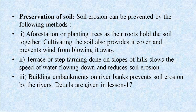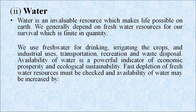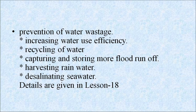Soil erosion can be prevented by afforestation, terrace or step farming, and building embankments on river banks. Details are given in lesson 17. Next is water. Water is an invaluable resource. We depend on fresh water resources for our survival, which is finite in quantity. We use fresh water for drinking, irrigating, waste disposal, etc. Availability of water is a powerful indicator of economic prosperity and ecological sustainability. Fast depletion of fresh water resources must be checked and availability of water may be increased by: increasing water use efficiency, recycling water, capturing and storing flood runoff, harvesting rainwater, and desalinating seawater. Details are given in lesson 18.